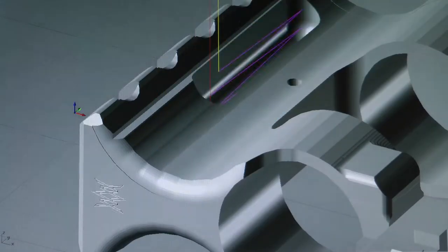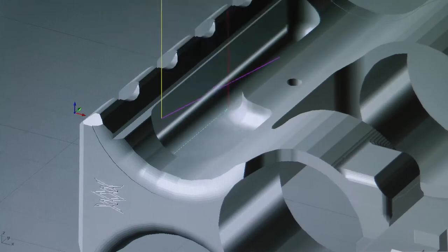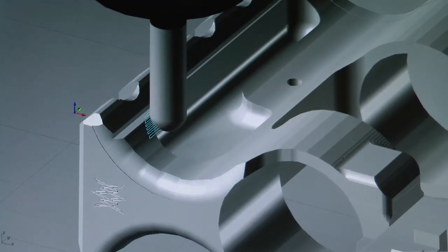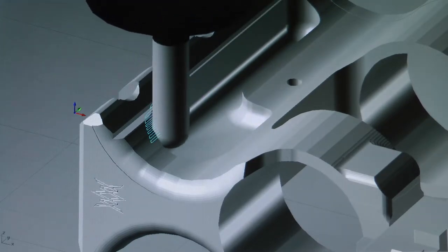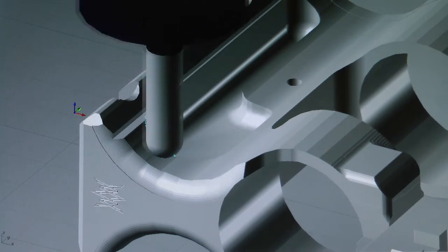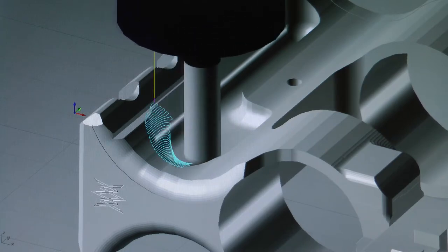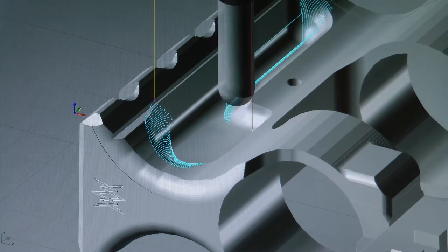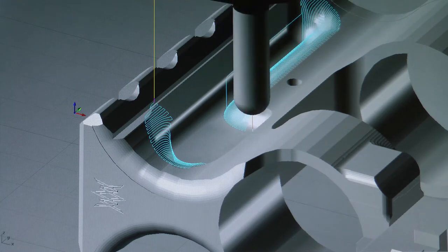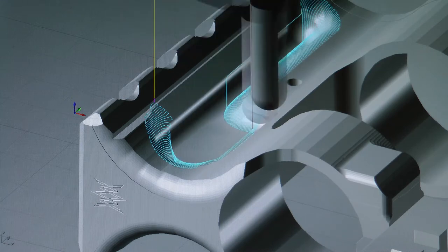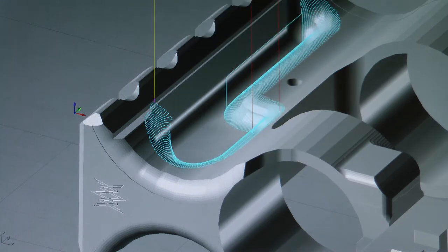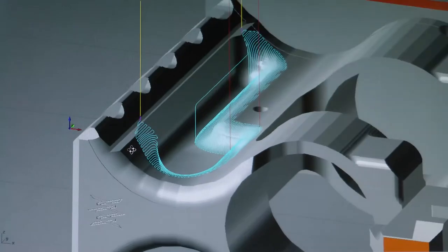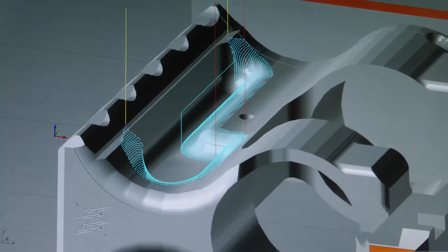So this is the 3D toolpath right here that's going to round over, basically just round over all those sharp edges after I pocket it out. This is a 4% stepover with a 3/16 inch ball mill.